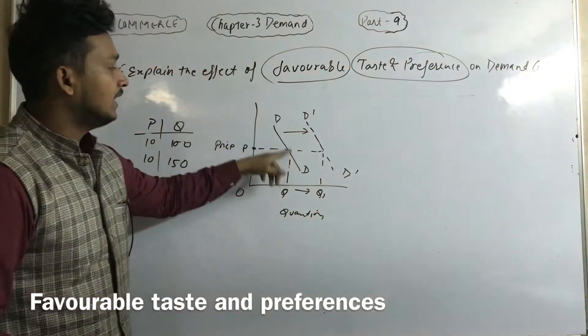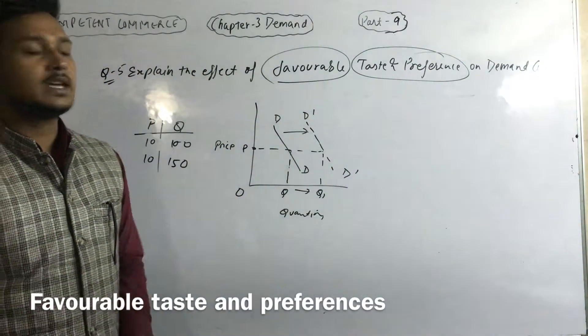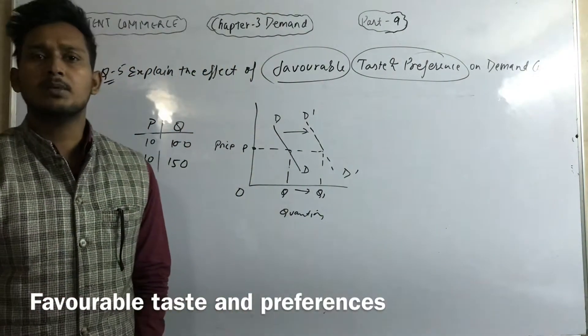Now we can explain the effect of unfavorable taste and preference on the demand curve of the given commodity. Demand will fall, then demand curve will shift to the left side.